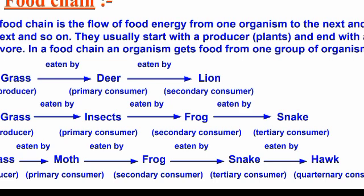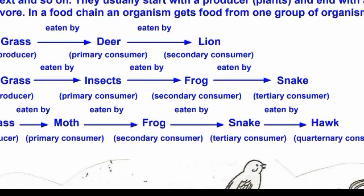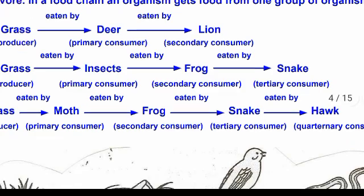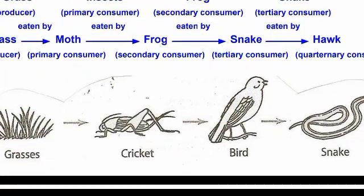Grasses produce their own food, so we call them producers. Deer eat grass, making deer the primary consumer. Another example: grass → insect → frog → snake. Grass is the producer, insect is the primary consumer, frog is the secondary consumer, and snake is the tertiary consumer.